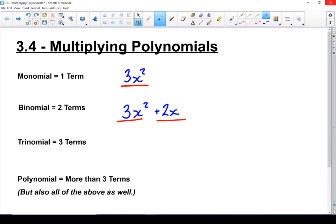A trinomial might look like 3x squared plus 2x plus 5. One, two, three terms.